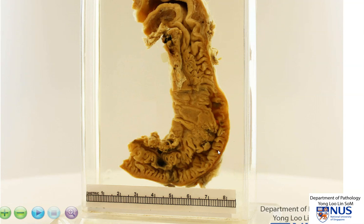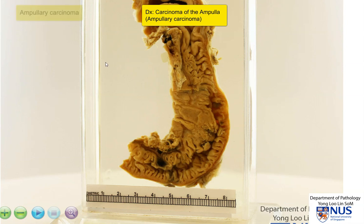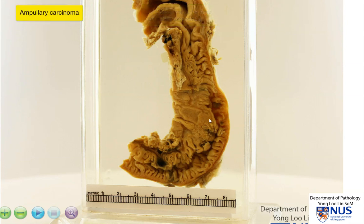The diagnosis here is carcinoma of the ampulla of Vater. The definition of ampullary carcinoma actually includes the actual ampulla itself where the CBD penetrates the duodenal wall, and it also includes carcinomas that arise at the duodenal papilla.